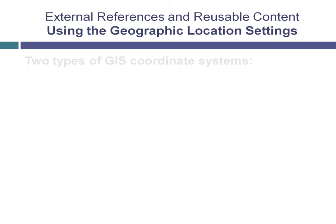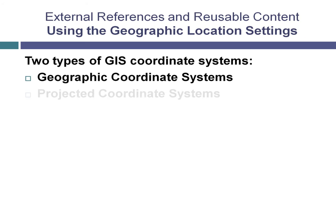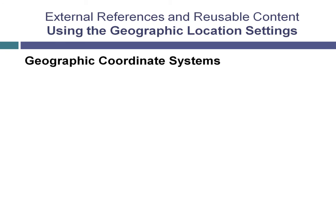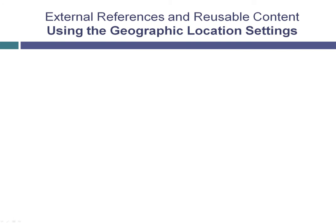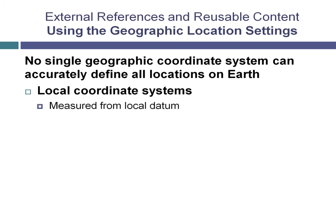There are two types of GIS coordinate systems that are commonly used: geographic coordinate systems and projected coordinate systems. Geographic coordinate systems take into account the curvature of the earth, and a location is commonly specified in terms of longitude, latitude, and elevation. Because the earth is not perfectly round, no single geographic coordinate system is able to accurately define all locations on the surface of the earth. Consequently, various organizations define local coordinate systems, where measurements are taken locally from a local datum. Local coordinate systems are considered more accurate because they align more closely with the earth's surface at that locality.